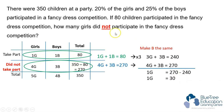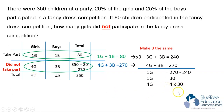The question asks for the number of girls who did not participate in the fancy dress. Go back to the table, look at the appropriate header — that's 4G we are looking for. Therefore, 4G is equal to 4 times 30, which is 120. 120 girls did not participate in the fancy dress competition.